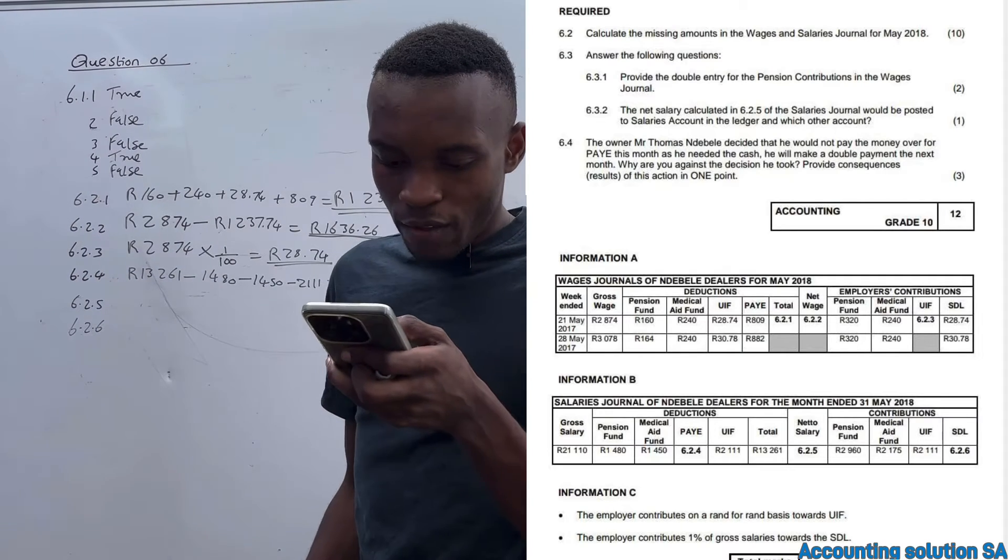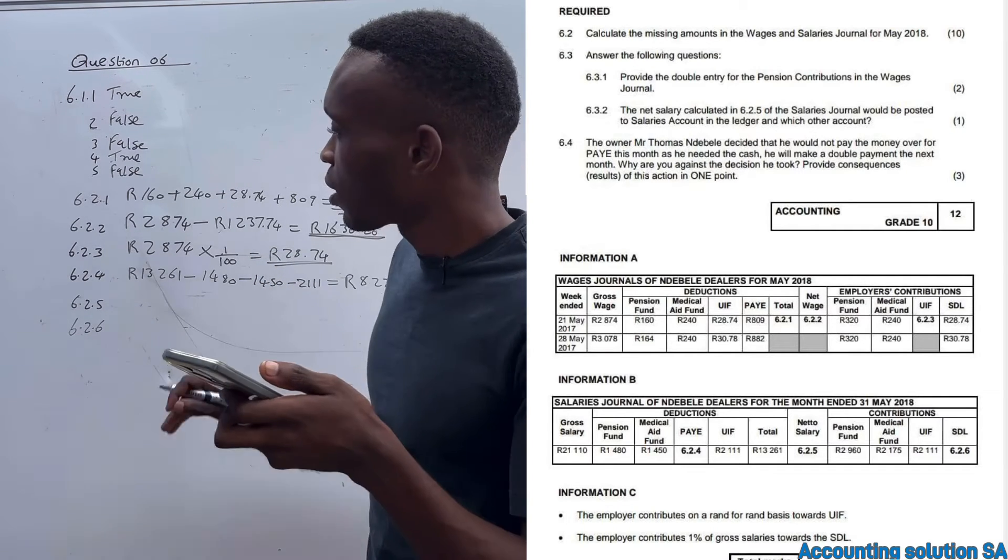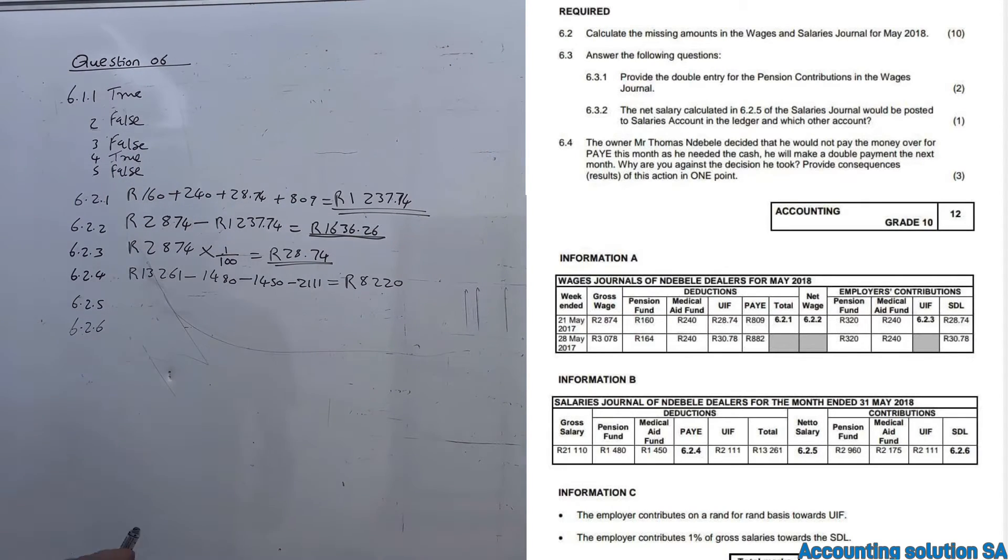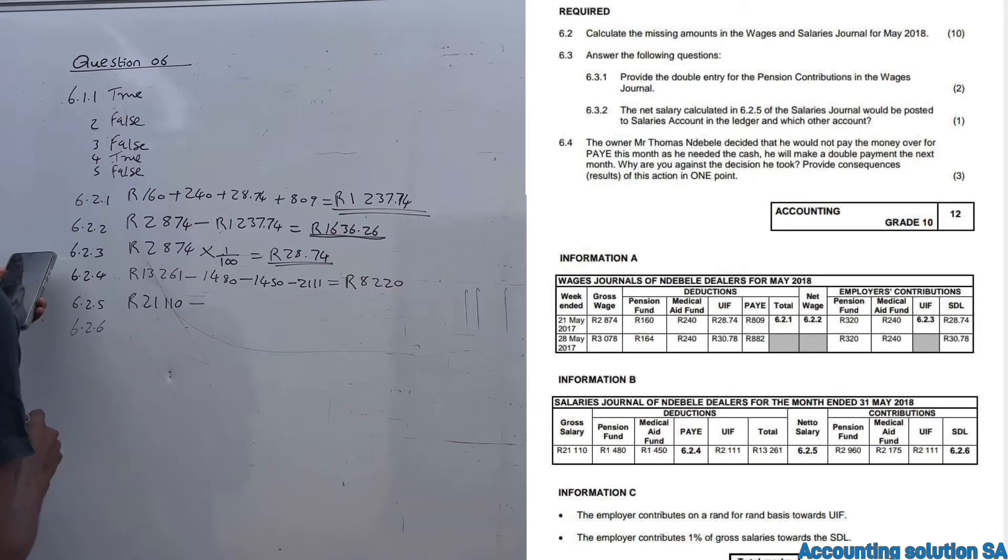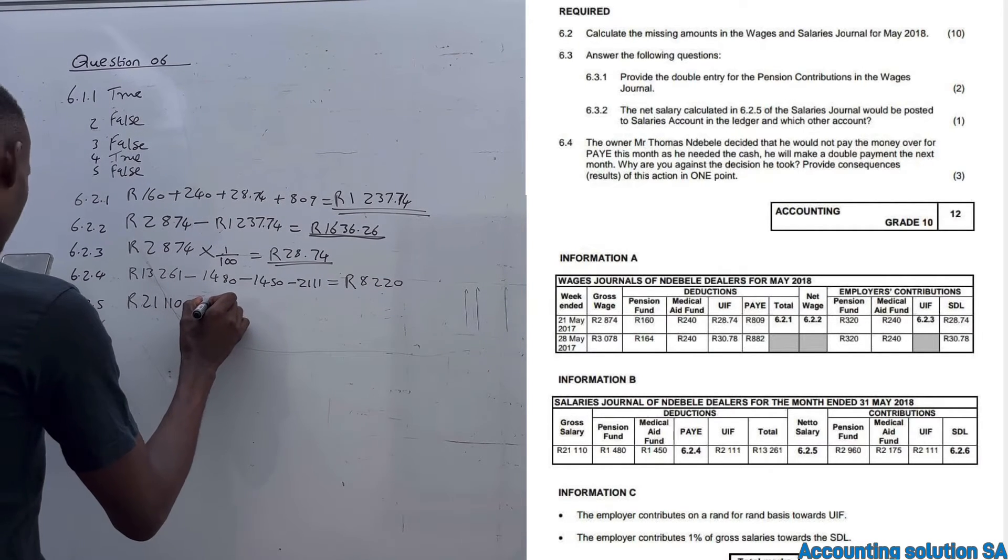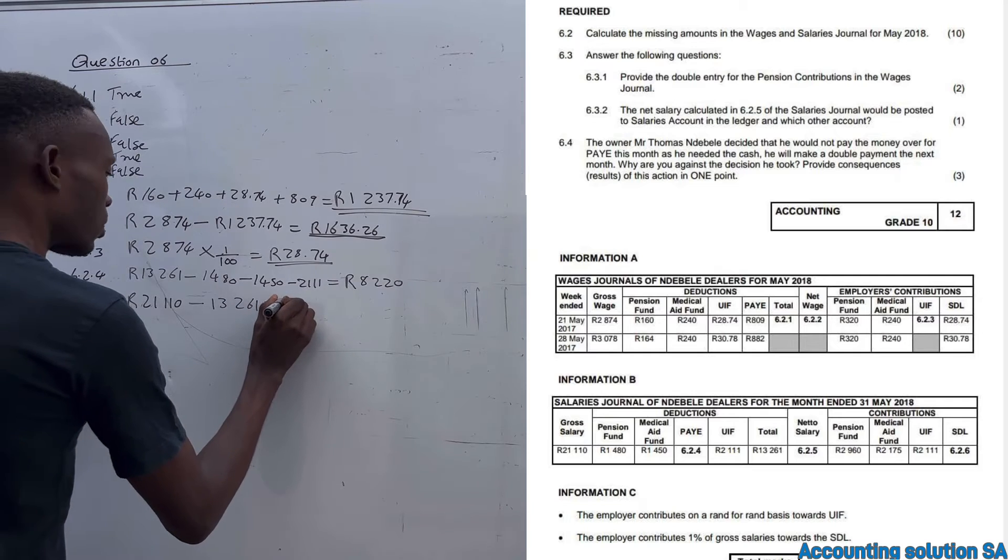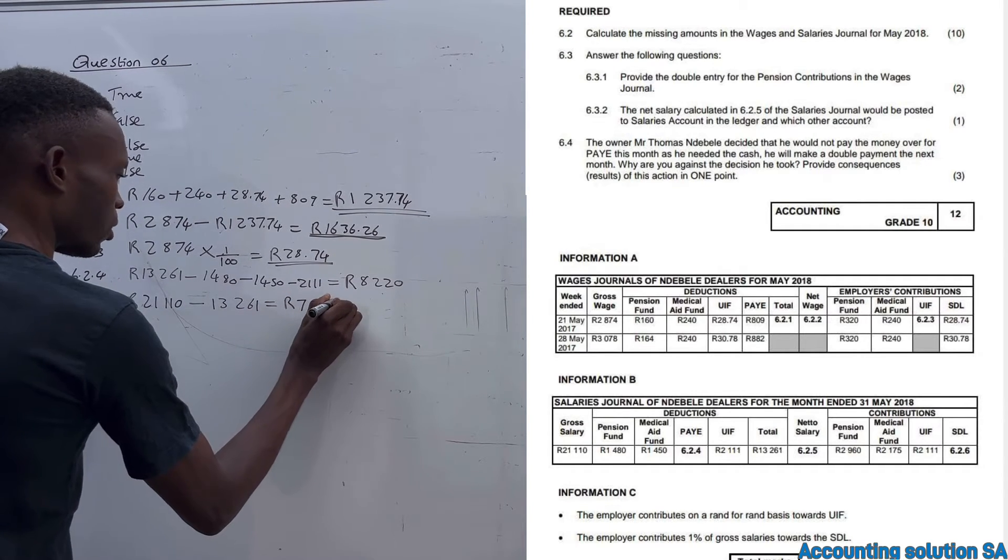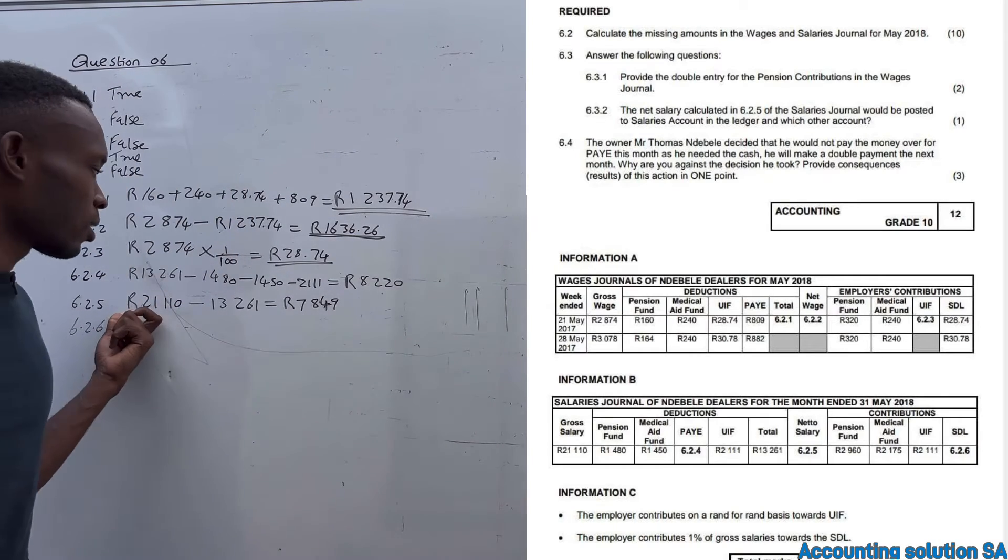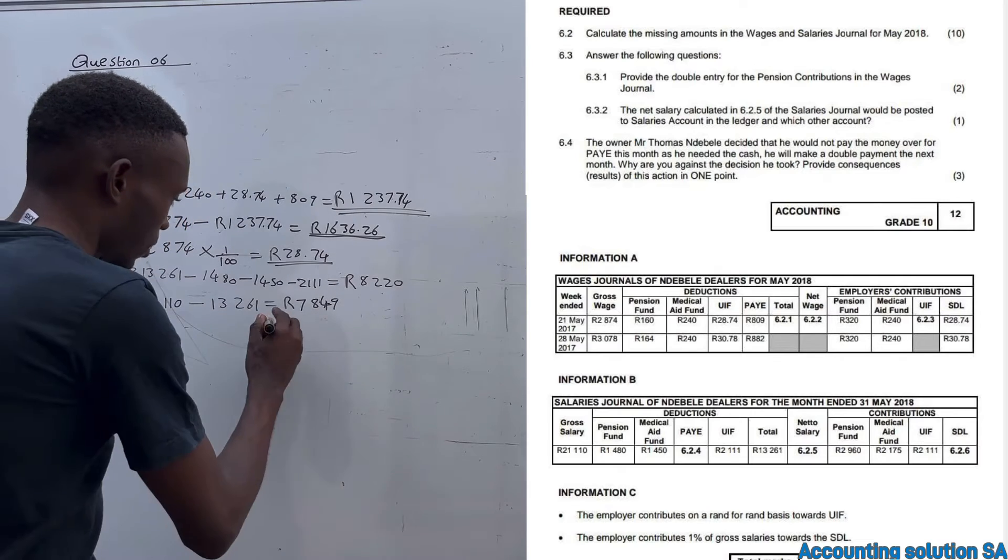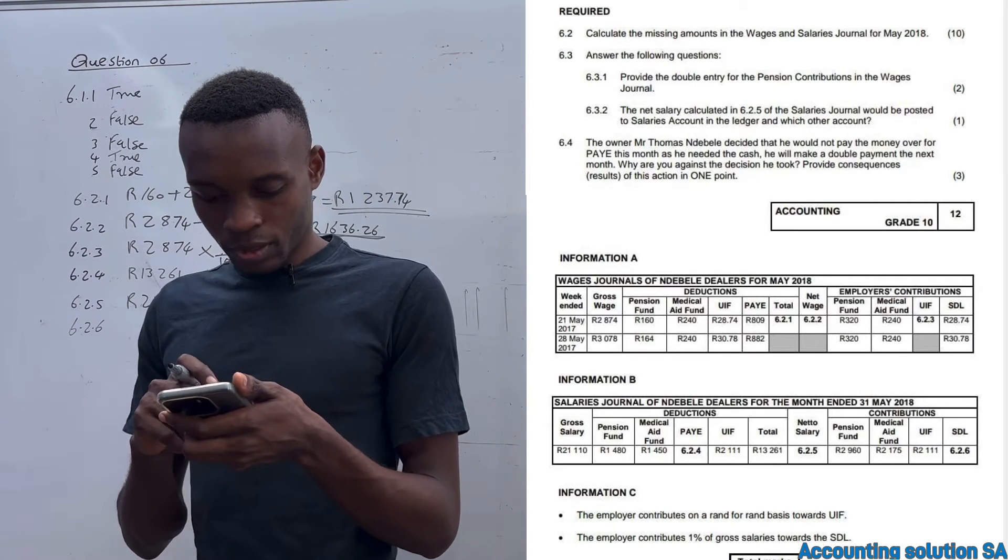6.2.5 - they're looking for net salary. We already calculated an example of it under 6.2.2, which means that we're going to take gross which is 21,110 and we subtract our deductions which is 13,261, which is going to give us 7,849. That's our net. Imagine, you work for 21,000 and you get paid 7,800 - that's too much, the deduction is too much.